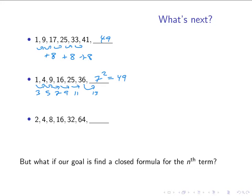In the last sequence, the differences between the terms get bigger and bigger. But if you shift your thinking about the relationship between terms, you'll see there's a multiplicative relationship — instead of adding to get to the next term, you multiply. Starting with two and doubling each time gives you this sequence, so twice 64 is 128, which would be the next term.